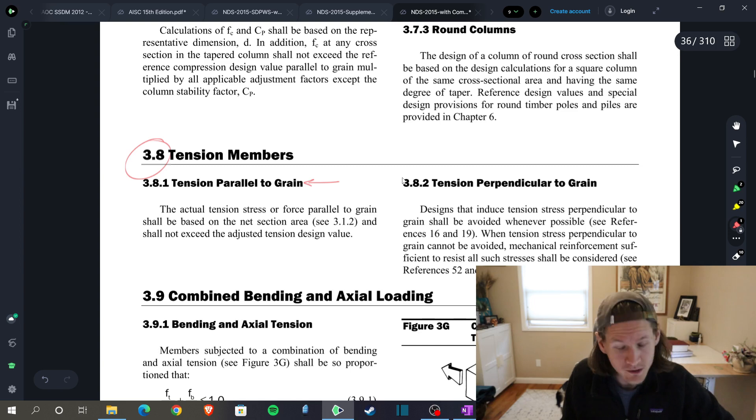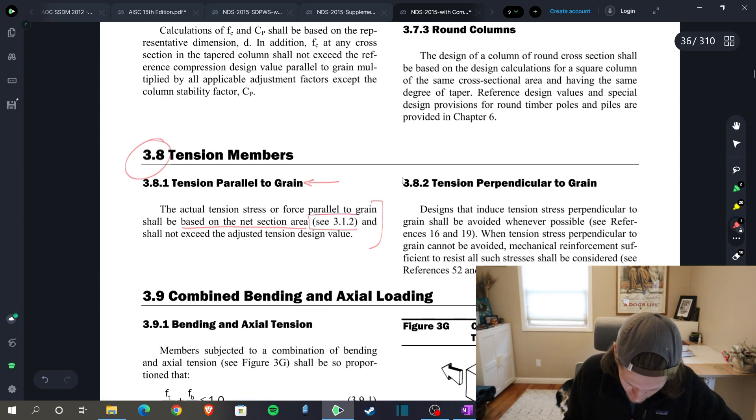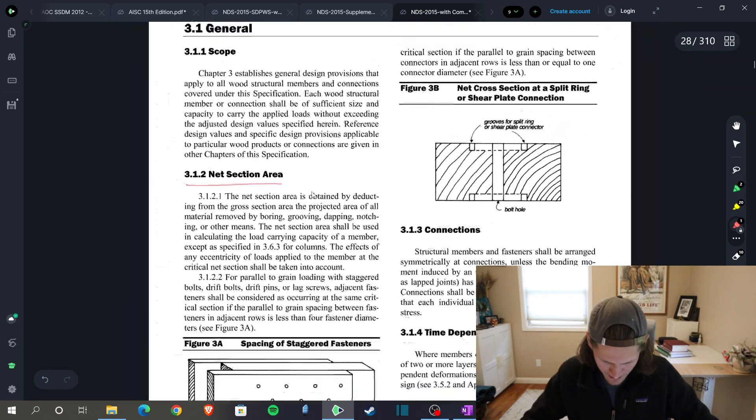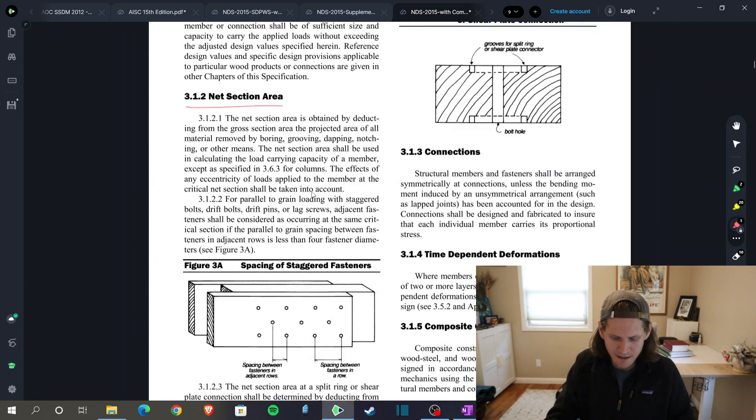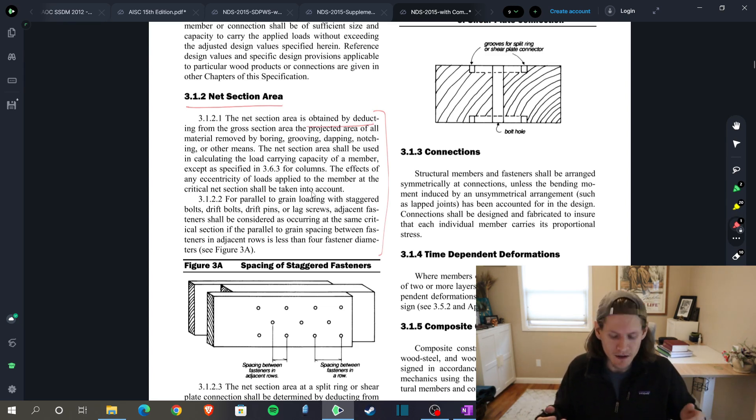Our cross-sectional area of our hold down, like we drew above, it's two 2x4s. We find ourselves in section 3.8 of the NDS. Very clearly, we are tension parallel to grain for this instance. And we have just this little baby paragraph, and it tells us that we need to design based on the net section area. And it gives us another section to head to that defines that.